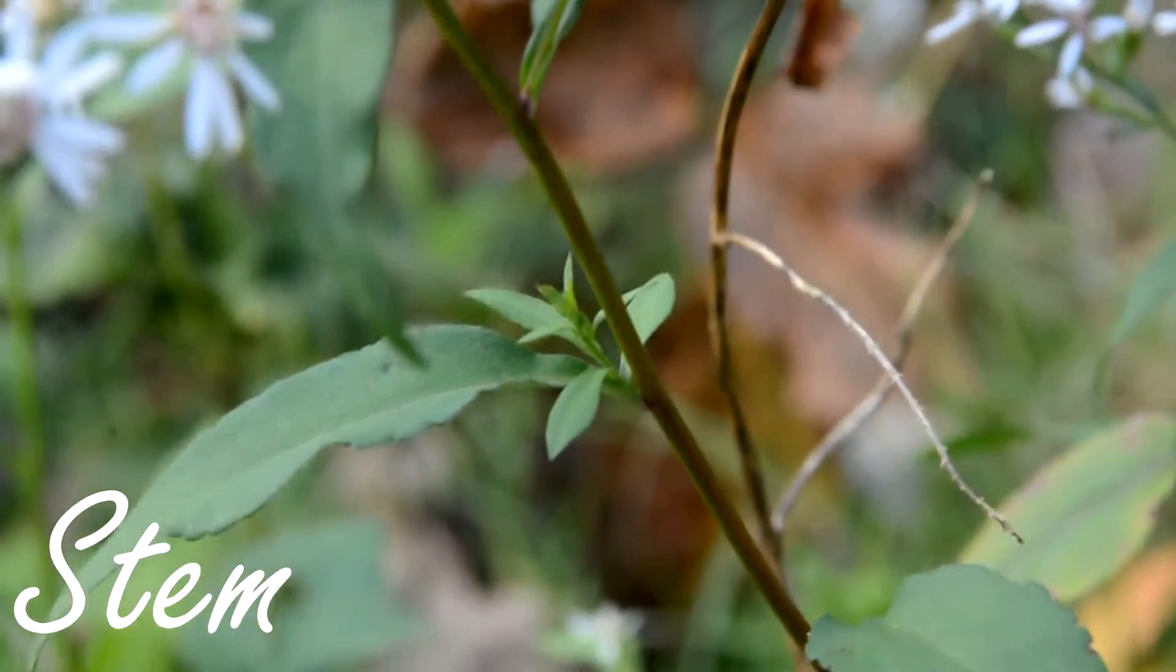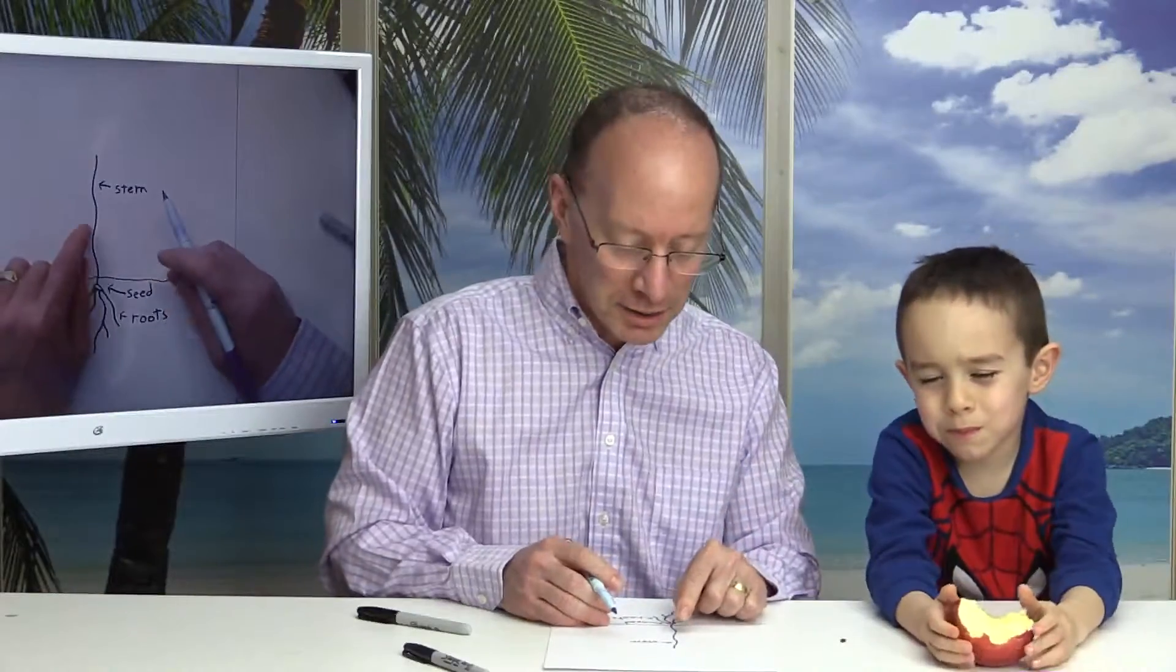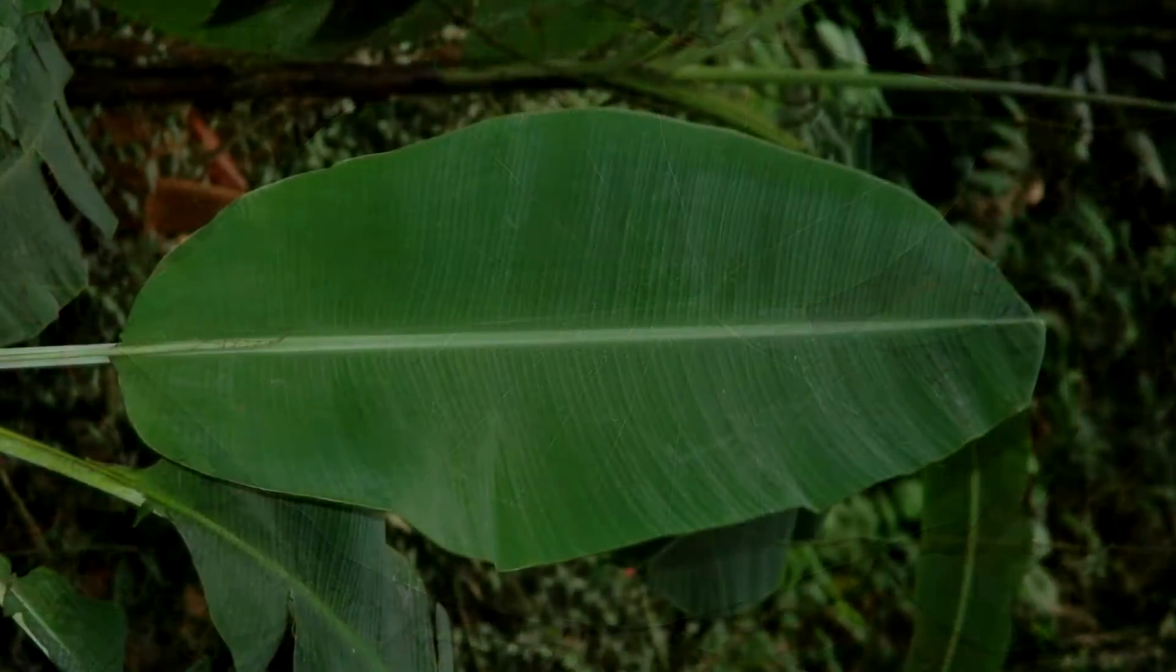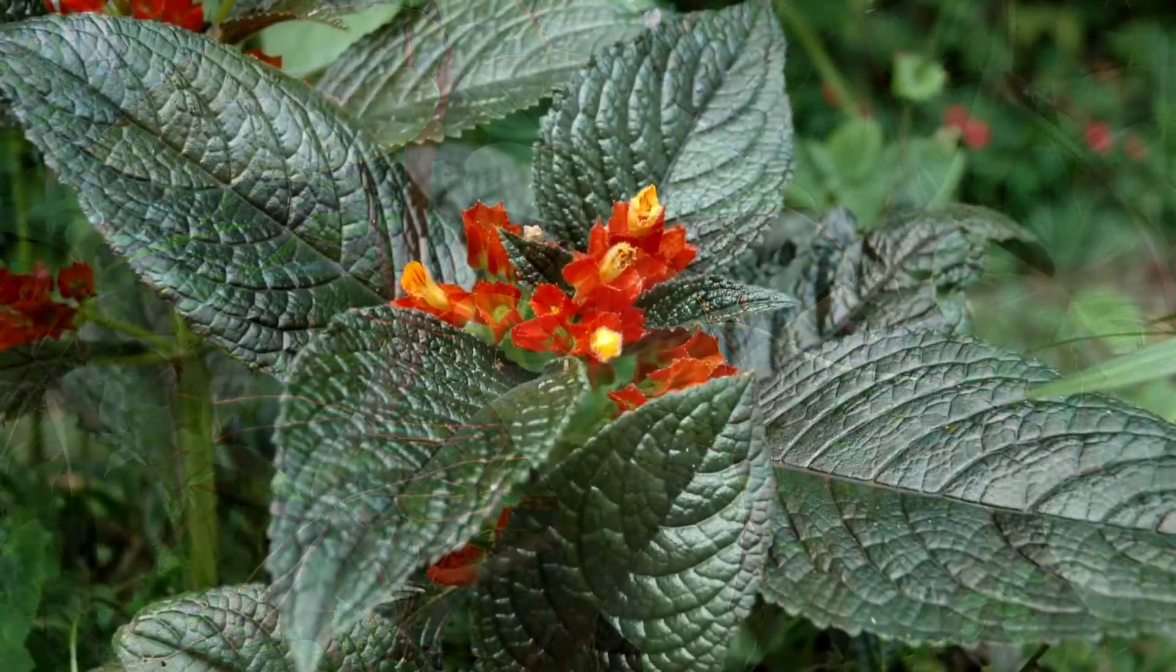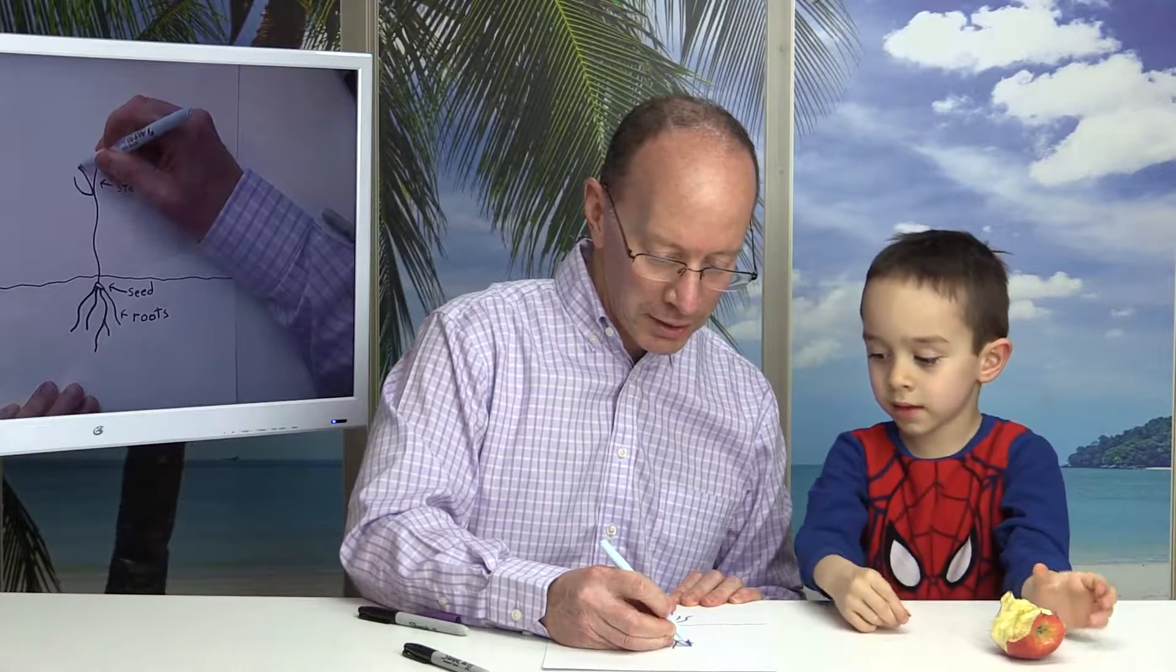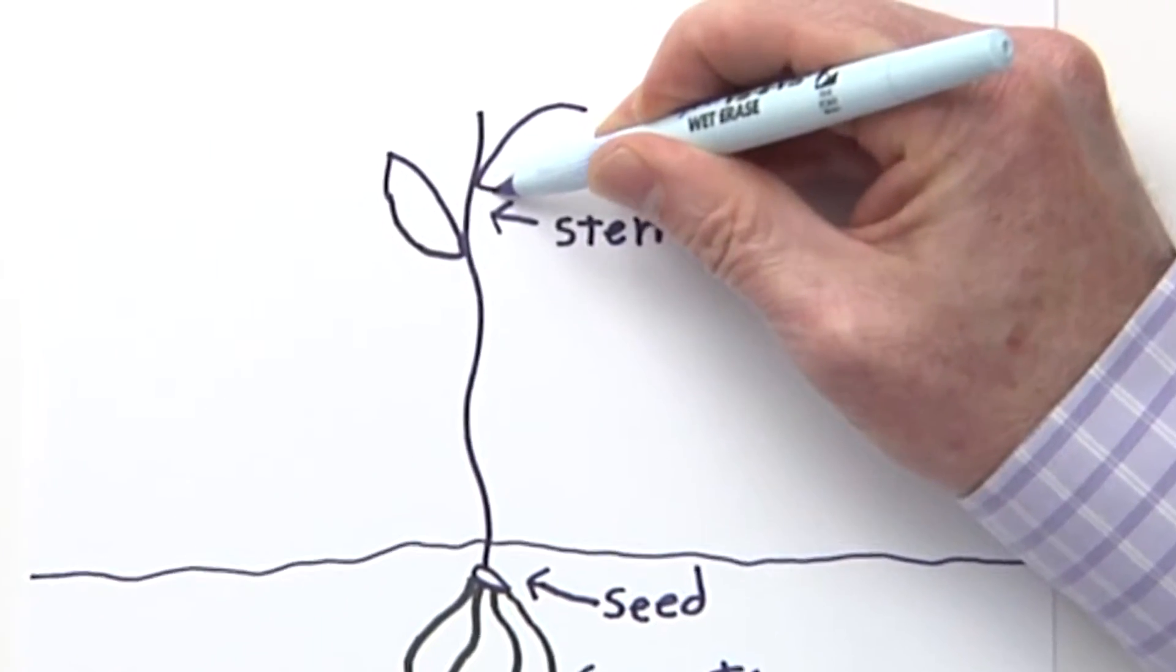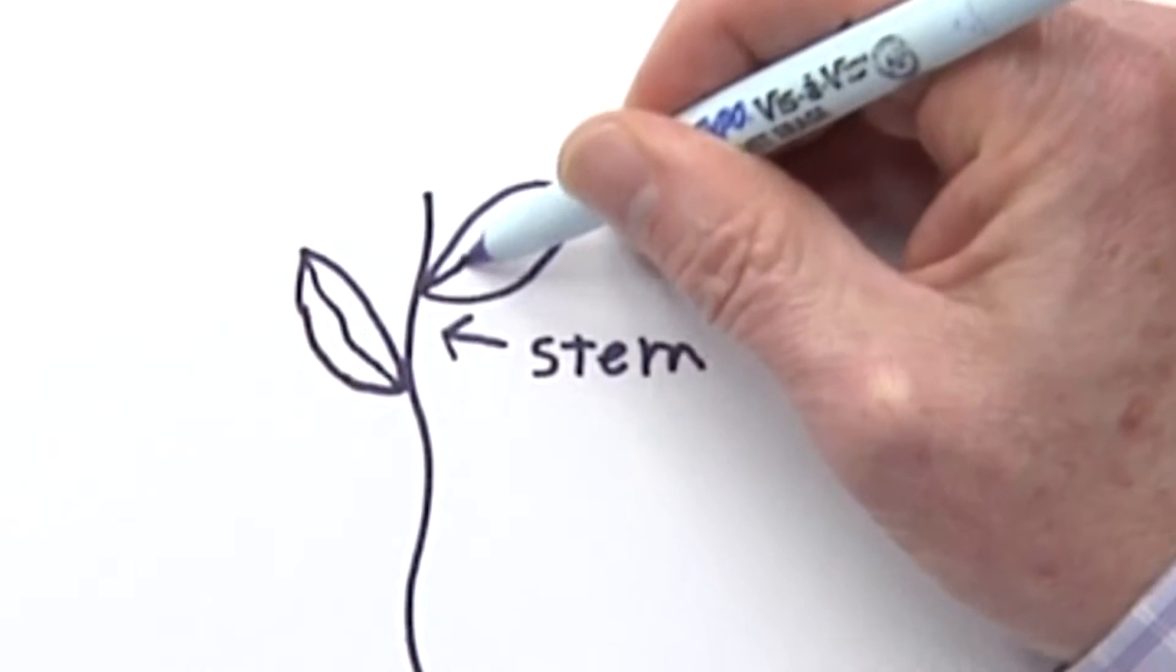Stems support the leaves and flowers and carry water and nutrients to the rest of the plant. And out of the stem will be leaves. This is where photosynthesis happens. It is the process by which plants make their own food. They need carbon dioxide, water, and sunlight. The leaves capture the sunlight. So we'll put a leaf right here and another leaf right here. You can even put a little line down here to add a little texture to it.